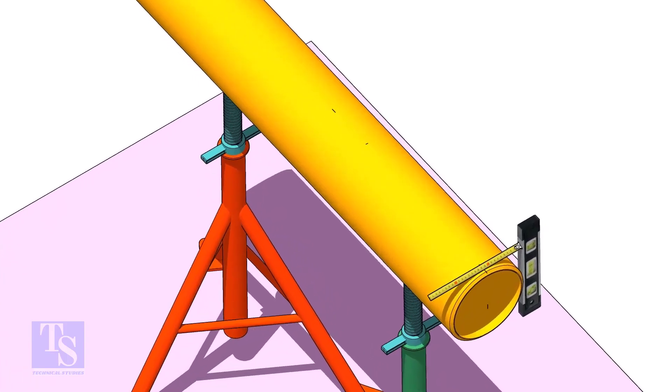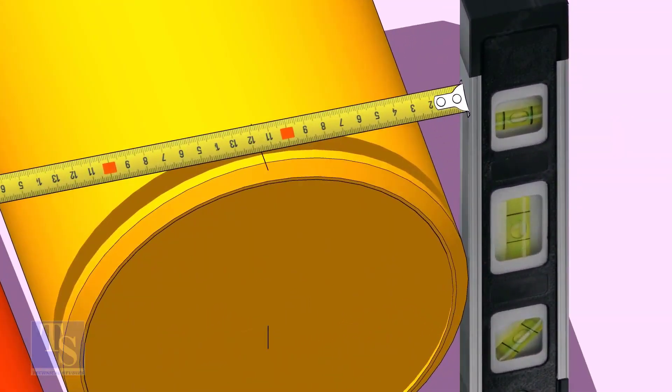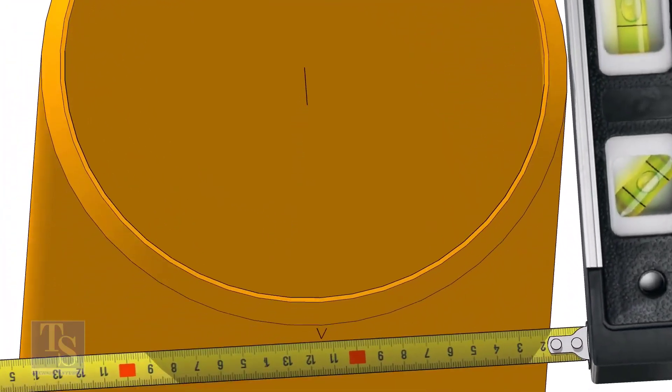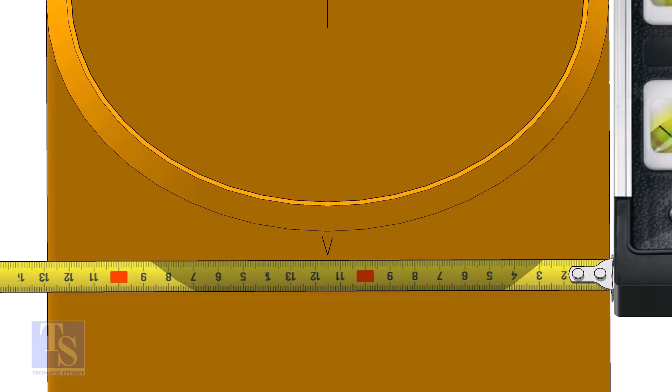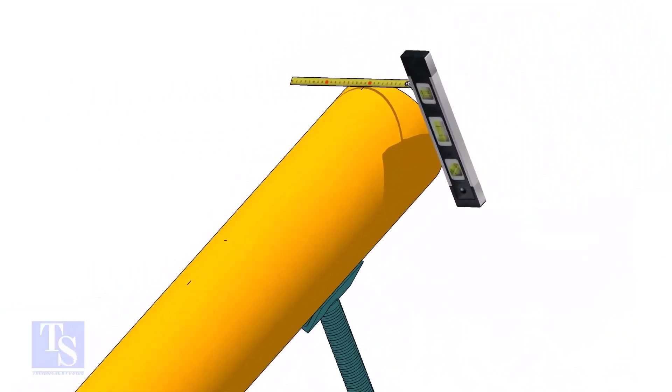Mark the center line of the header on the top and the bottom. Hold a level bottle firmly and vertical at the side of the pipe as shown. Mark half OD at the top and the bottom side of the pipe. Cross check the dimension from the opposite side to ensure the marking is correct.